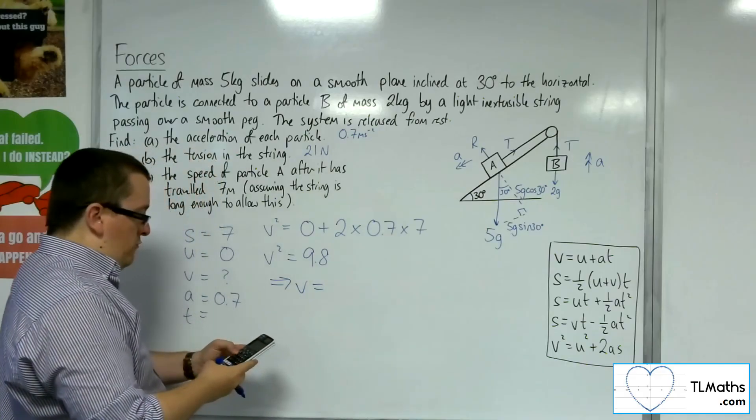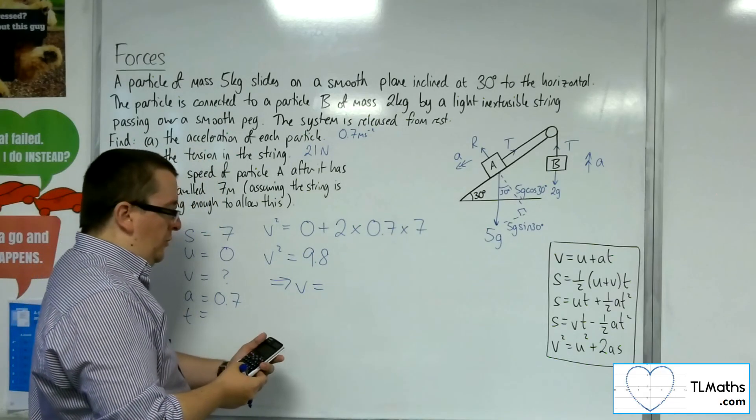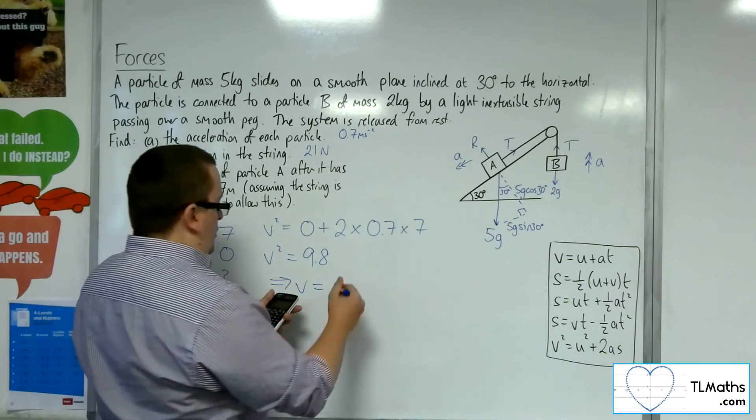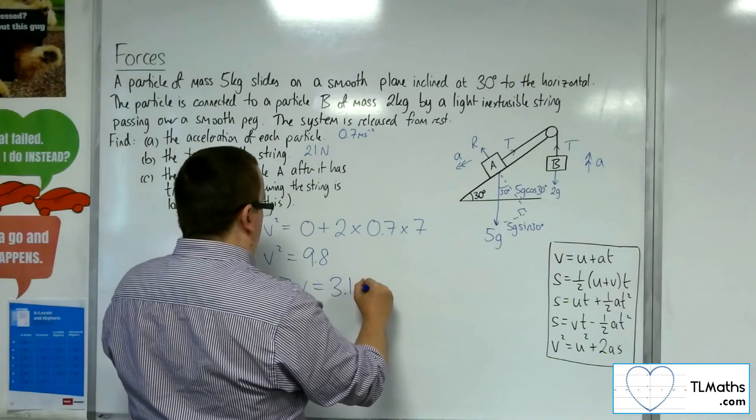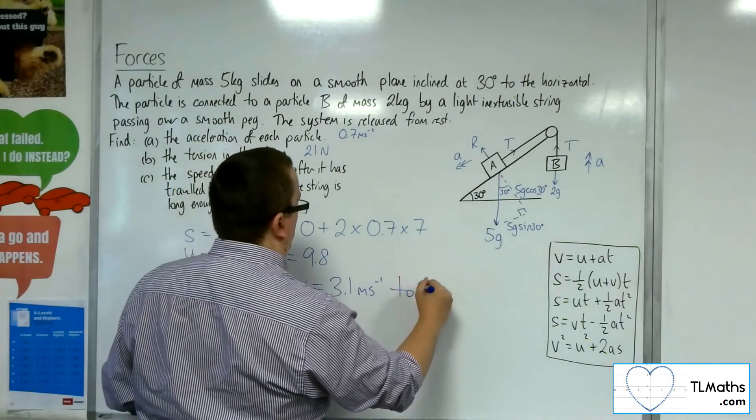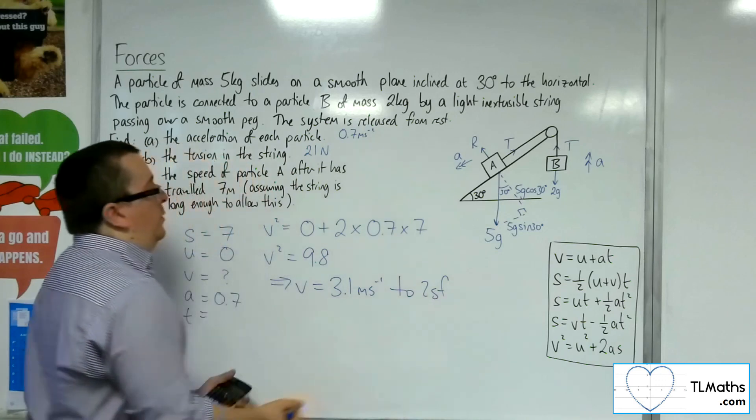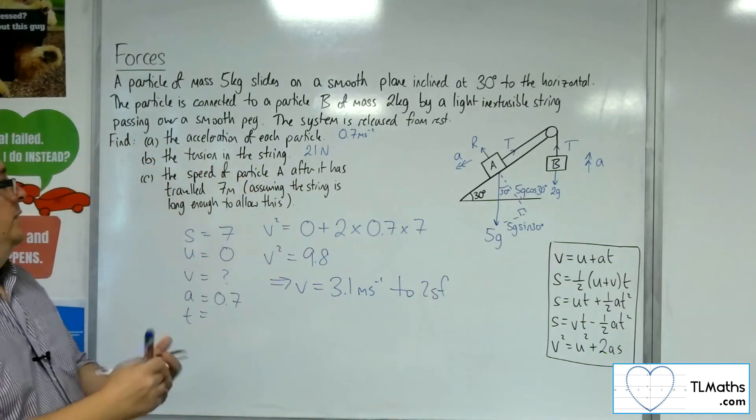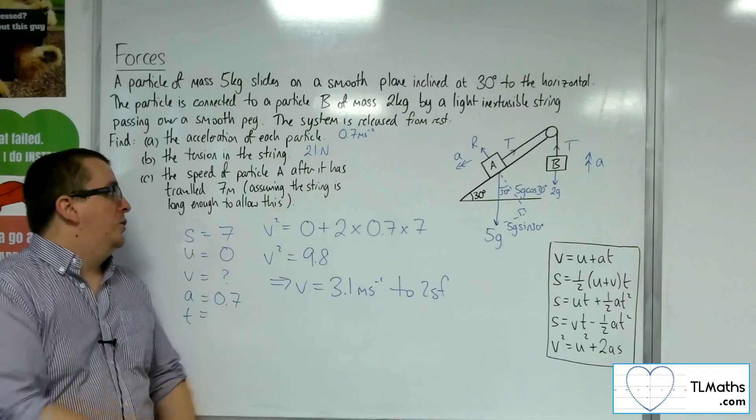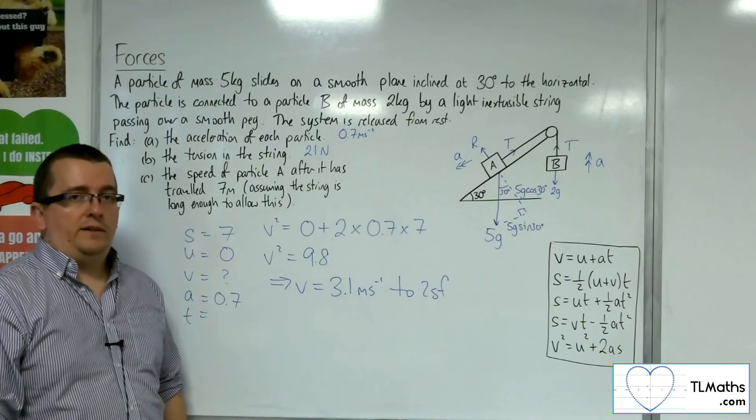So V is the square root of 9.8, which is 7 root 5 over 5, which is 3.1 meters per second to two significant figures. So that is the speed of particle A after it has travelled 7 meters.